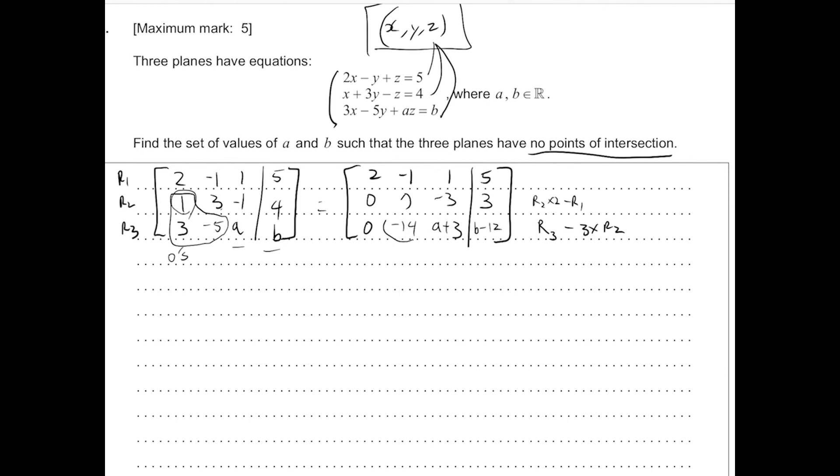Next up, we're going to try to eliminate this entry and make it a 0. So we're keeping the first row, 2, minus 1, 1, 5. We can keep the second row, 0, 7, minus 3, 3. And we can, if we call this r2 prime and this r3 prime, we can try r3 prime minus 2 times r2 prime.